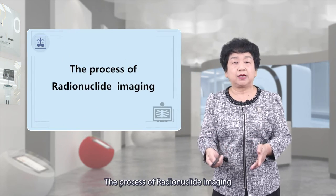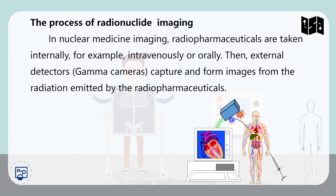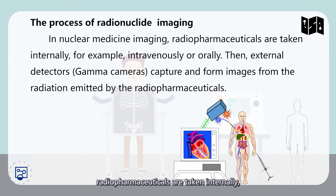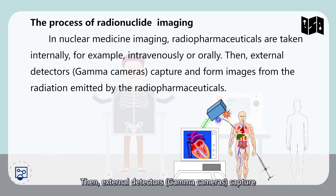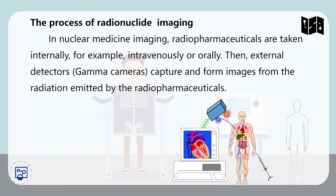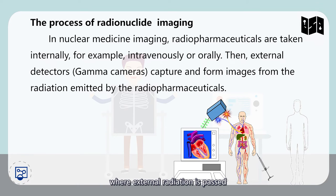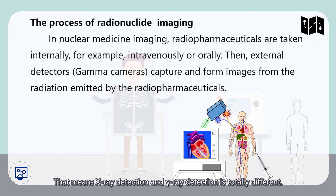The process of radionuclide imaging: in nuclear medicine imaging, radiopharmaceuticals are taken internally, for example intravenously or orally. Then external detectors, for example gamma cameras, capture and form images from radiation emitted by the radiopharmaceuticals. This process is unlike diagnostic X-ray, where external radiation is passed through the body to form the image. That means X-ray detection and gamma-ray detection are totally different.